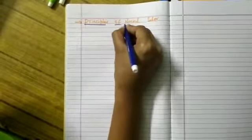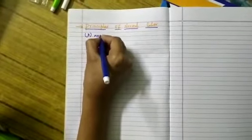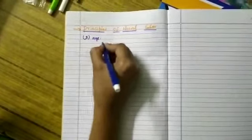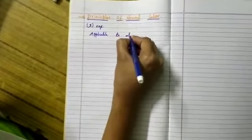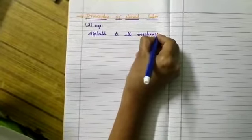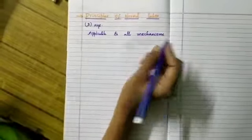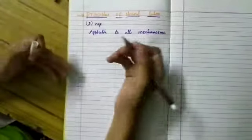Principles of normal labour. So we have three principles. They are three in number and they are applicable to all mechanisms. So whatever be the mechanism of the labour, be it the left occiput anterior, right occiput anterior or posterior, these principles remain the same.